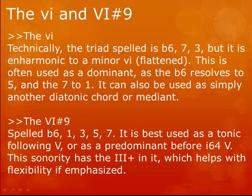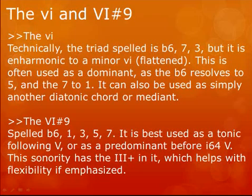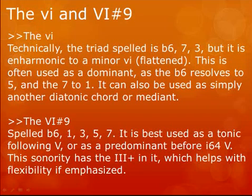You can use the 6 sharp 9 as a predominant, or actually as the tonic, because it has the 3 augmented in it. You know how the 6 acts as a tonic in a deceptive progression — you can have 1, 2, 3, 5, 6, and that's a deceptive progression. The sharp 9 has the same function as that tonic in the deceptive progression. Because the sonority has the augmented 3 in it, its flexibility is emphasized — it can sometimes be a dominant, but it's usually a tonic or predominant.